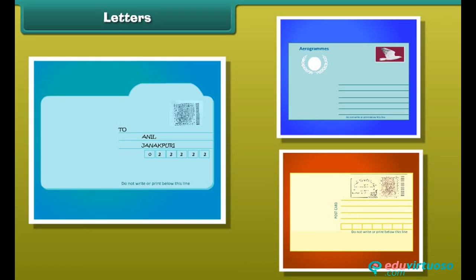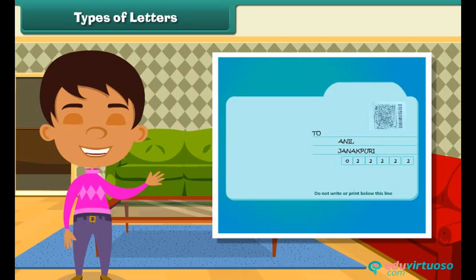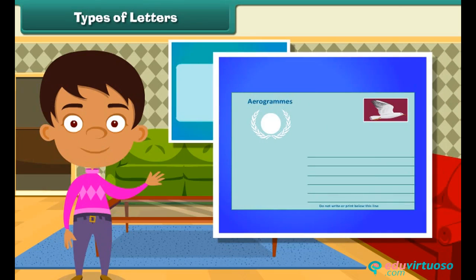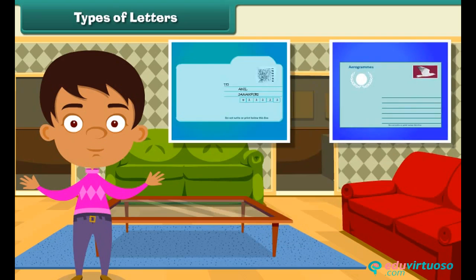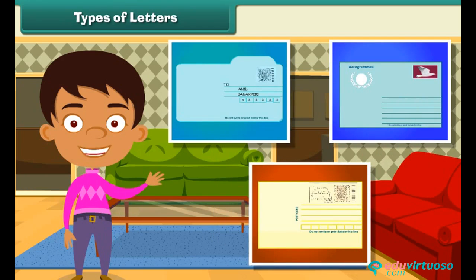Let's know about them in detail. The inland letter is a light blue colored sheet of stamp paper which contains a message and gets folded in a particular way. An aerogram is also a type of inland letter carried by airmail. A postcard is meant for exchanging information written on a small yellow colored card.